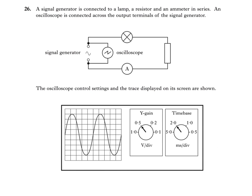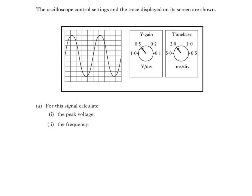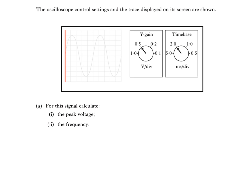Part A then says, for this signal calculate: one, the peak voltage, and two, the frequency. So at this point it's useful to remember that the oscilloscope's display is basically a graph with voltage on the y-axis. This midline indicates zero volts, so if the trace is above the line it's a positive voltage, and if it's below the line then it's a negative voltage. On the x-axis of our graph we have time.